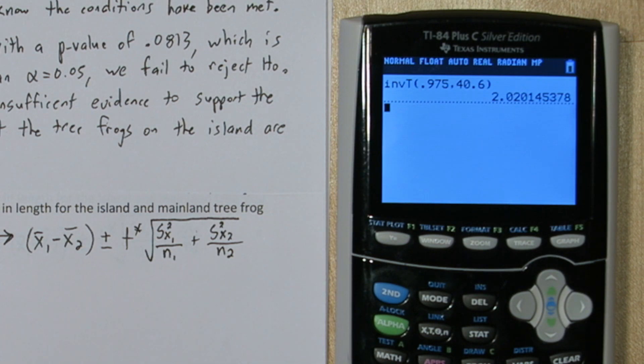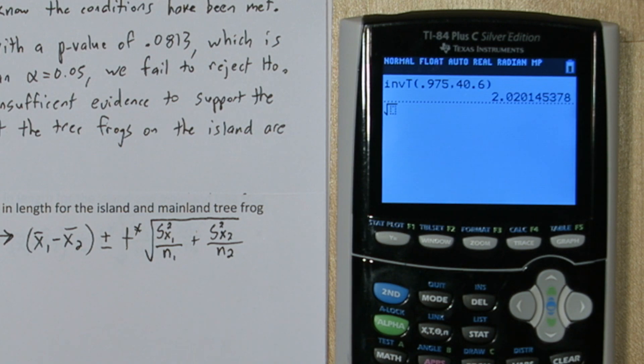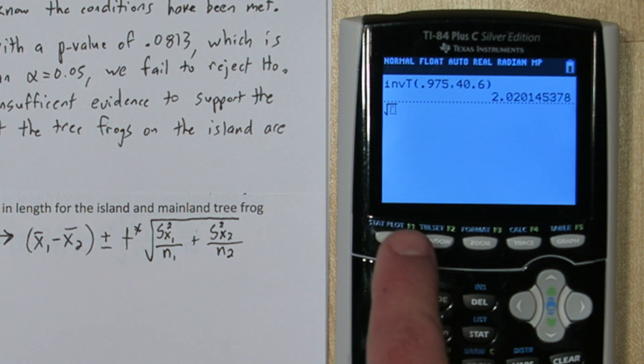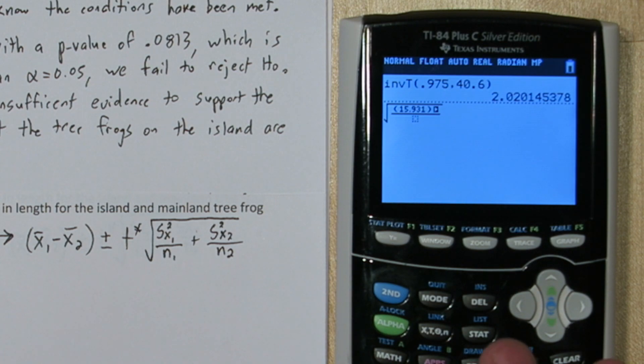Now let's calculate the standard error. I'm going to type the square root sign first. And anytime you're typing fractions into the calculator, there's a trick you can use. If you press alpha and then the y equals and press enter, you can now type in a fraction. So we have our standard deviation of the island lengths. We're going to square that.